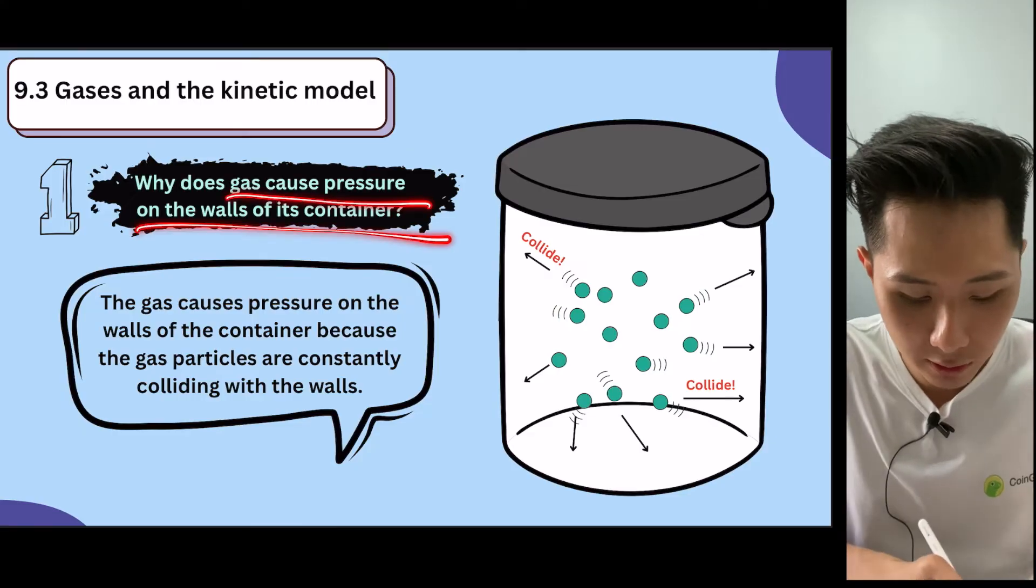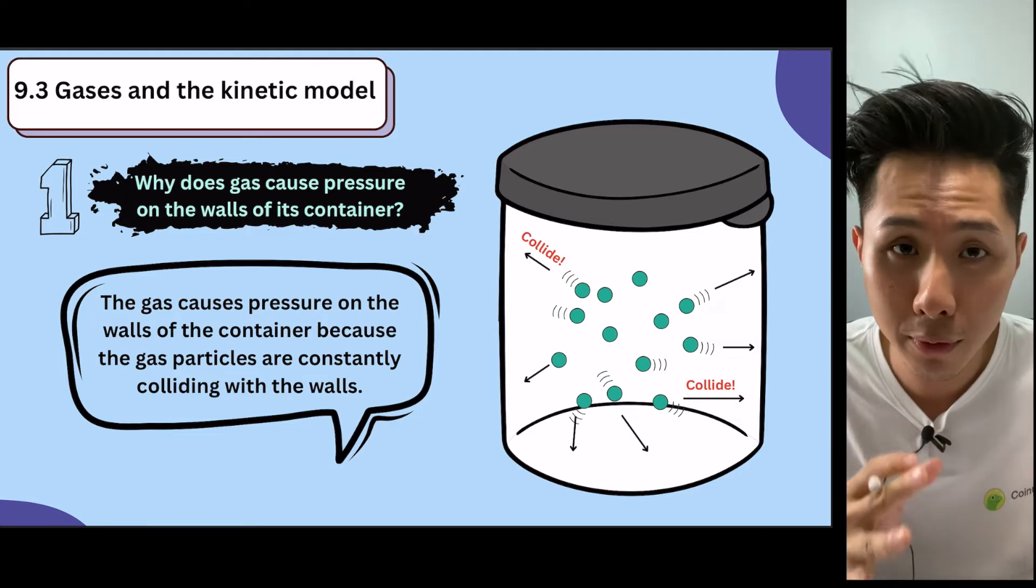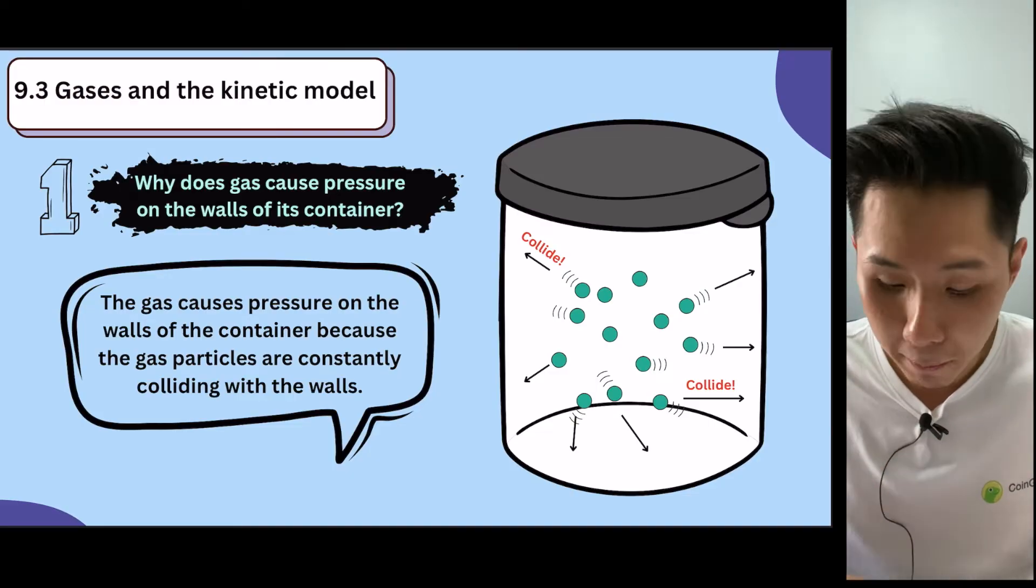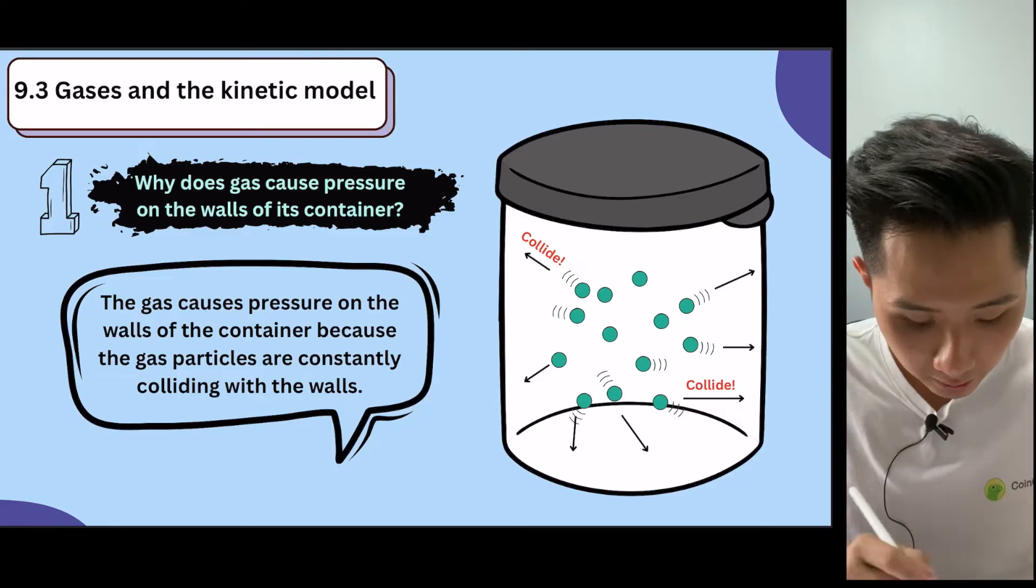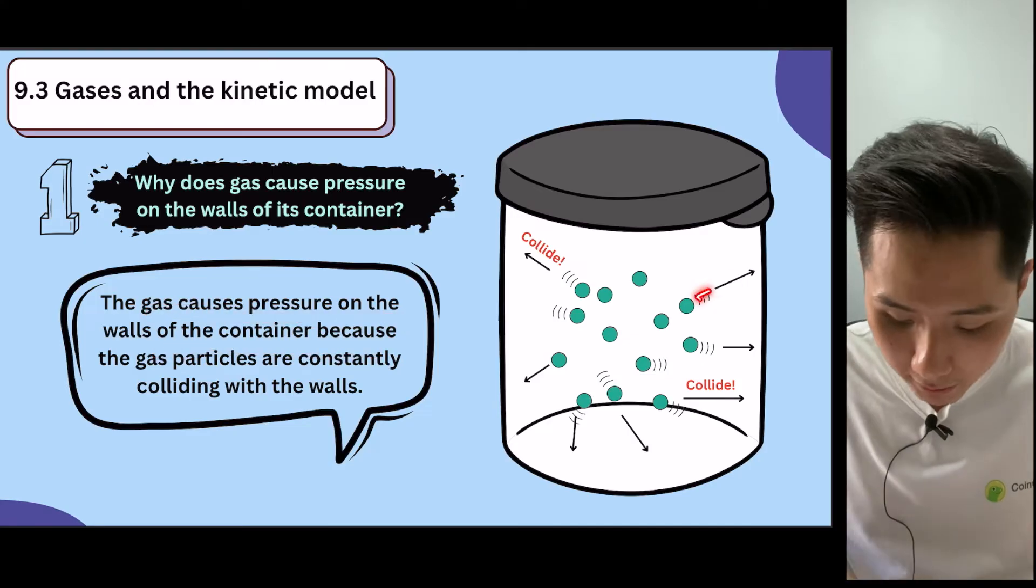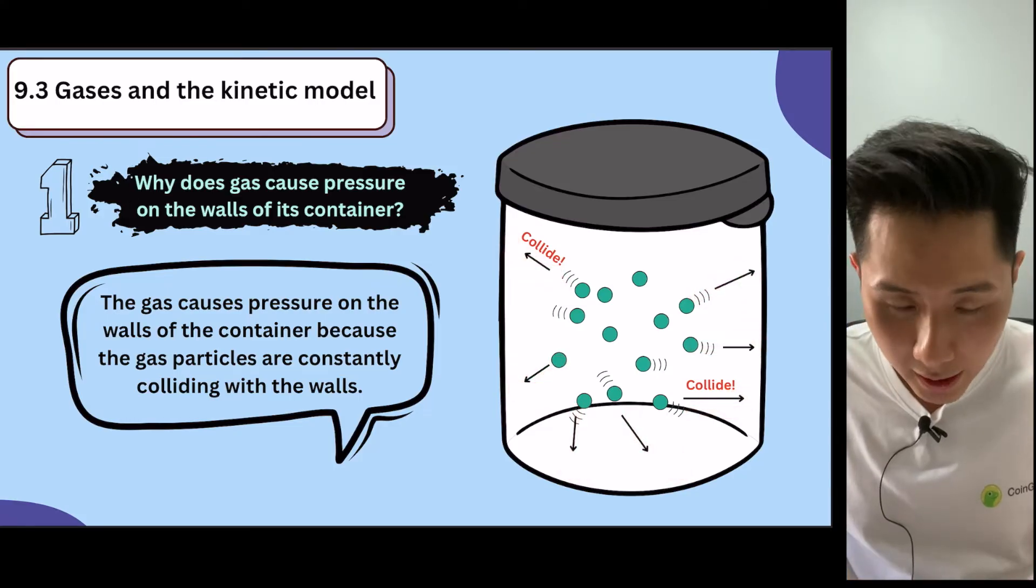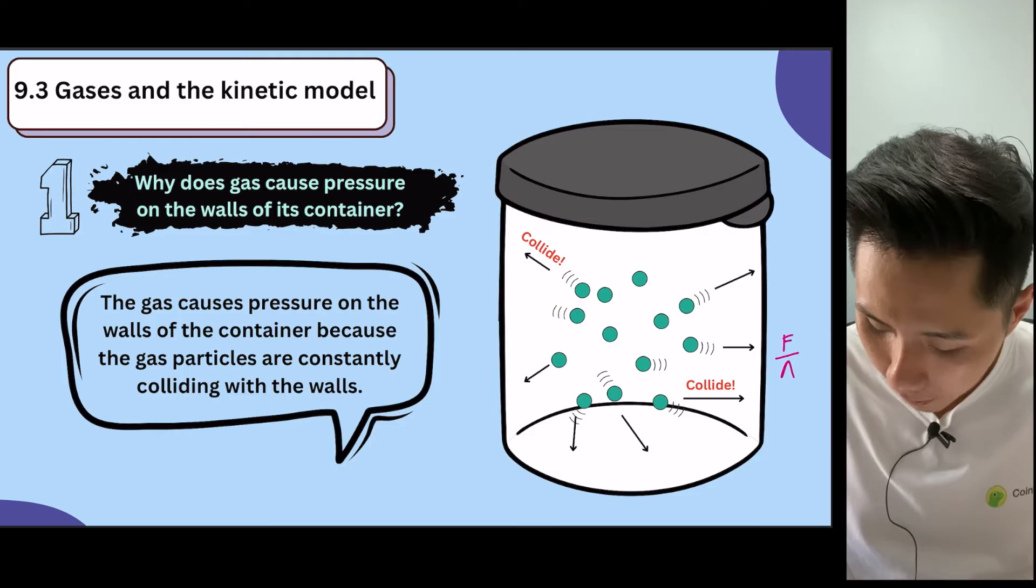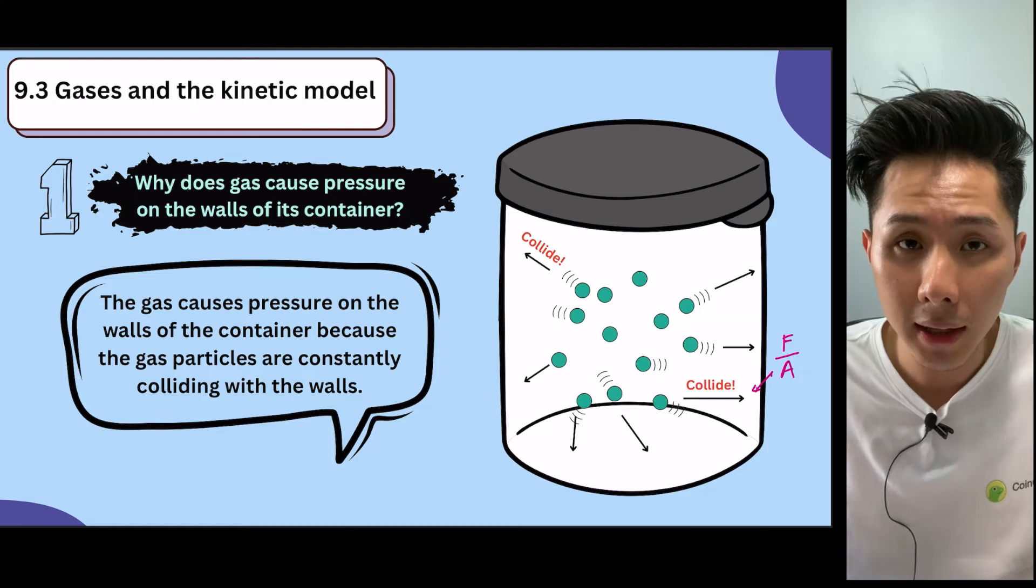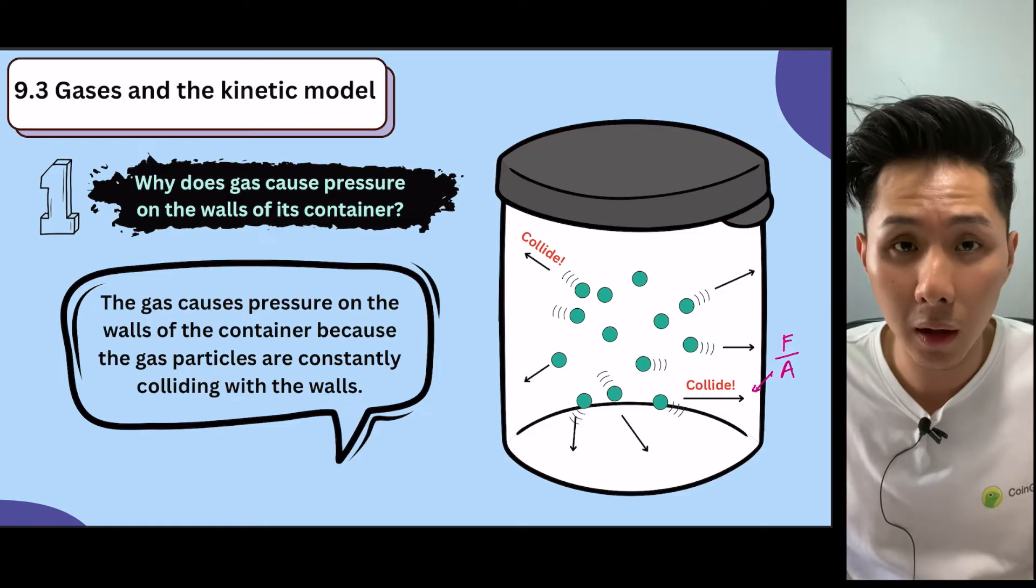Why does gas cause pressure on the wall of the container? If you remember pressure that we learned in chapter 8, we know that you can calculate pressure by measuring force divided by area. So that means pressure is created when there is a force. And this is exactly what happened. The gas causes pressure on the wall because all these air particles are colliding with the wall of the container. And that's what's created. When the air particle hits the container, it's going to have force. And the area which they hit will be used to calculate what is the pressure.